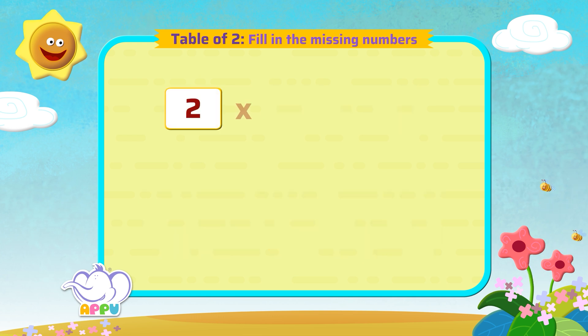Two multiplied by a number is ten. What is the missing number?